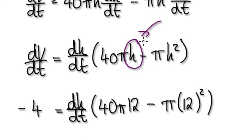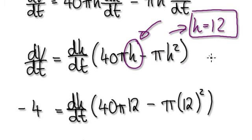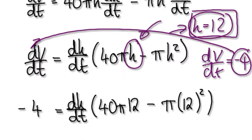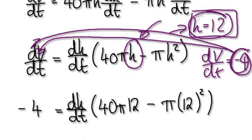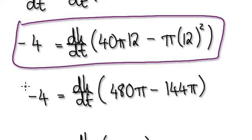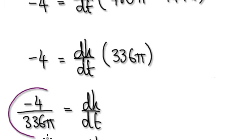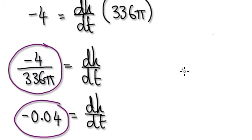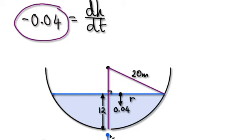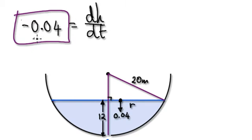At the precise moment in time when h was 12, the question stated dv/dt was negative 4, so we put that in. At this precise moment in time, dv/dt is negative 4 and h is 12, so we substitute both values in. That takes us to the final calculation, and dh/dt is given by this result — so we are losing height by roughly 4 centimetres per minute.